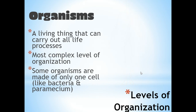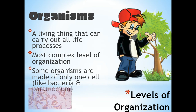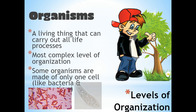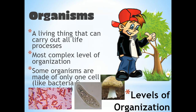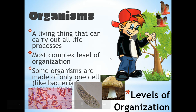Those organ systems come together to form an organism. Examples include a boy, a tree, bacteria, a paramecium, or a fungus. Living things that can carry out life processes are called organisms, and it's the most complex level of organization.